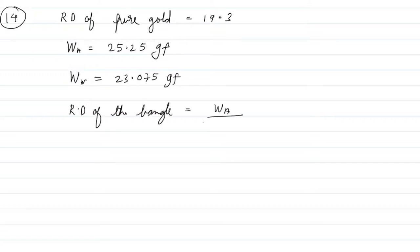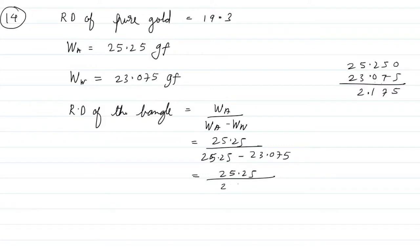To find relative density, use weight in air divided by weight in air minus weight in water. That is 25.25 upon 25.25 minus 23.075, which gives 2.175. Shifting all decimals, you get 25250 and 2175. So relative density is 11.609.